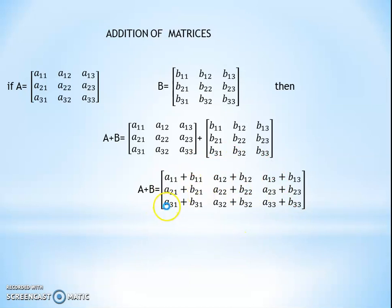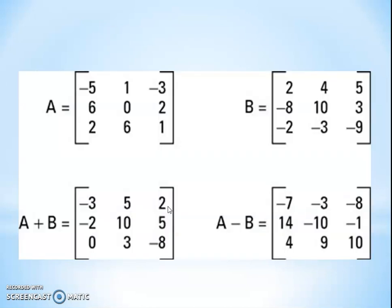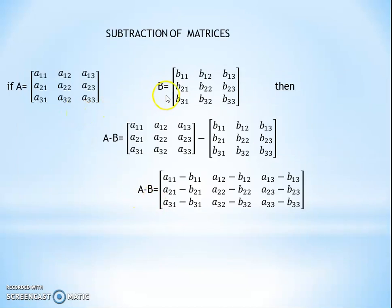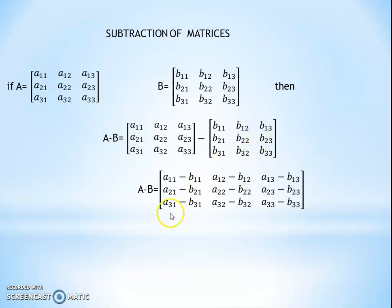Before going to the example, we explain the subtraction — the same trick applies. A equals [A11, A12, A13; A21, A22, A23; A31, A32, A33] — three rows and three columns. B equals [B11, B12, B13; B21, B22, B23; B31, B32, B33]. Subtraction A minus B equals A11-B11, A12-B12, A13-B13; A21-B21, A22-B22, A23-B23; A31-B31, A32-B32, A33-B33.